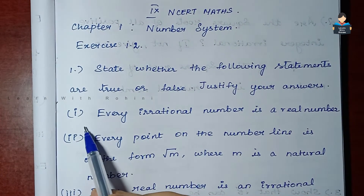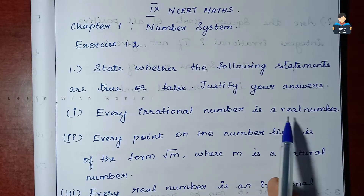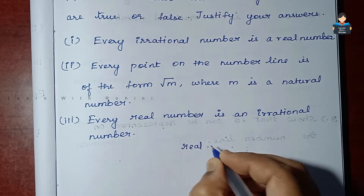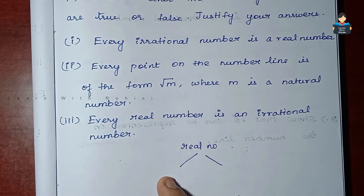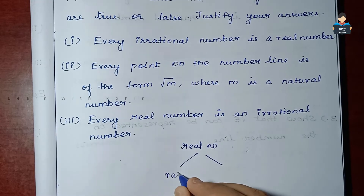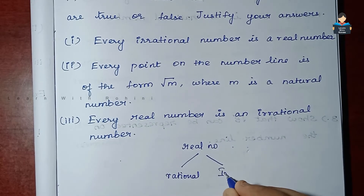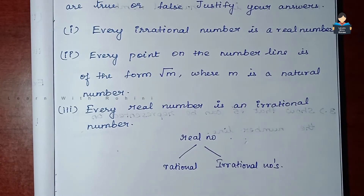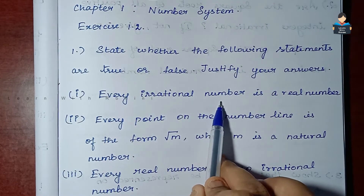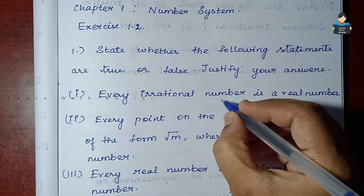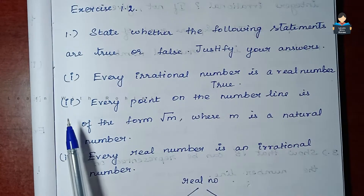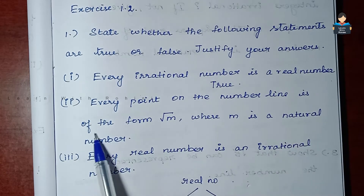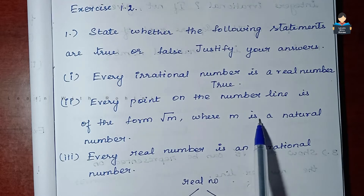The first statement is: every irrational number is a real number. Looking at the introduction, real numbers consist of both rational and irrational numbers. So statement one is true.